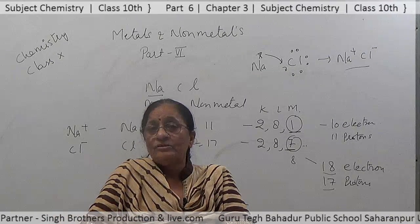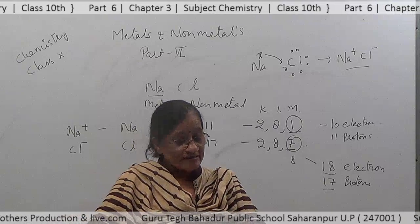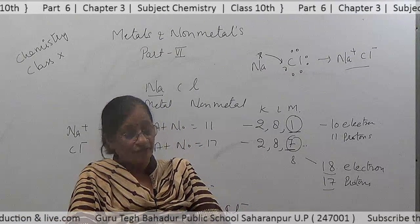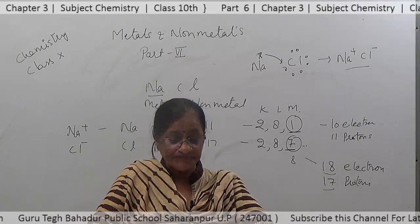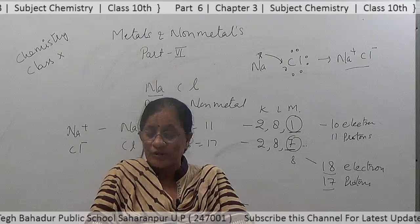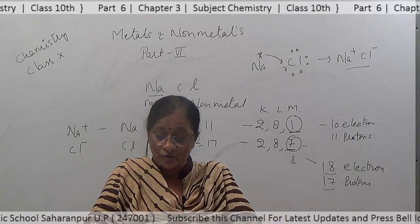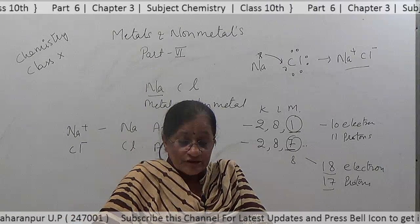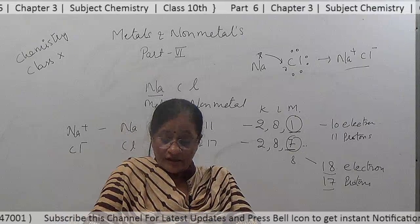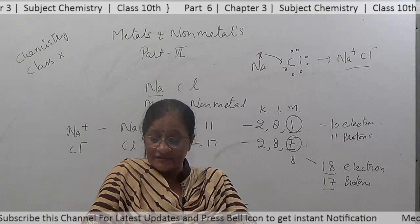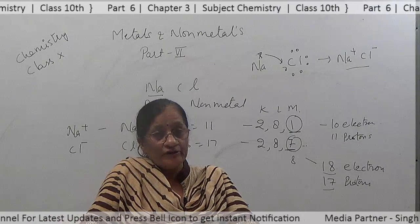Now, regarding the properties of ionic compounds — an activity is given on page number 48, activity 3.13. In this activity, samples of compounds or salts like sodium chloride, barium chloride, potassium iodide, etc. are taken to check their physical state. We observe that they are mostly solid and hard.